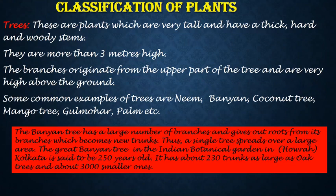Trees. These are the plants which are very tall and have a thick, hard and woody stem. They are more than three meters high. The branches originate from the upper part of the tree and are very high above the ground, forming a canopy of branches. Some common examples of trees around you are neem, banyan, coconut, mango, gulmohar, palm, etc.